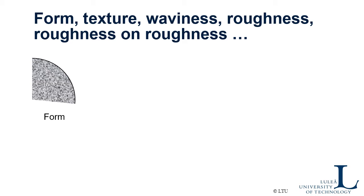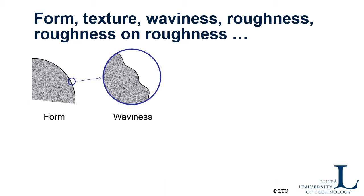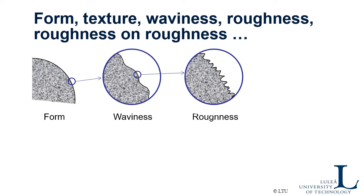When you look at a surface, you can distinguish between different scales — surface roughness is definitely a multi-scale problem. If you have a component, it has a certain form or shape, such as a cylindrical surface. On top of that, you have a waviness — if you zoom in you may see waviness coming from the manufacturing process, perhaps from vibrations during manufacturing. Zooming in again, you find roughness on the waviness. This is what we normally call roughness, and it typically determines the tribological behavior of a surface.